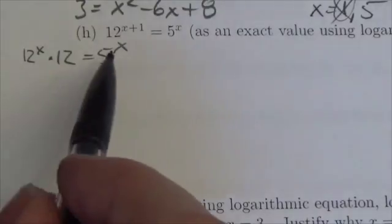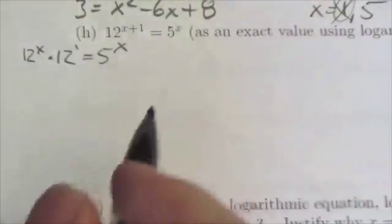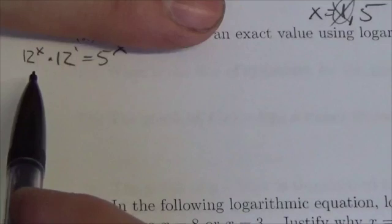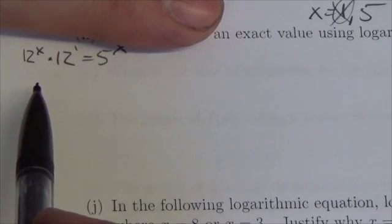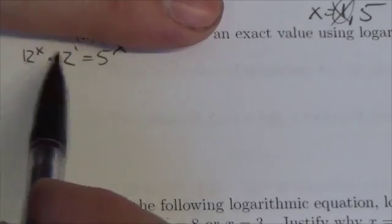Now if you're having a hard time seeing what I just did there just think of it like this. If you didn't see the original question, if I had 12 to the x times 12 to the 1 what would you do? Oh I'm multiplying powers I'll just add the exponents.